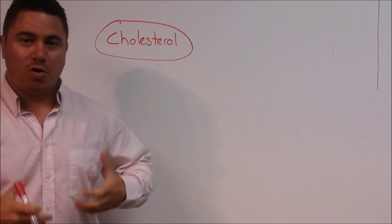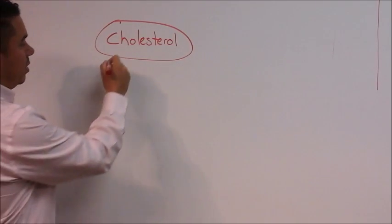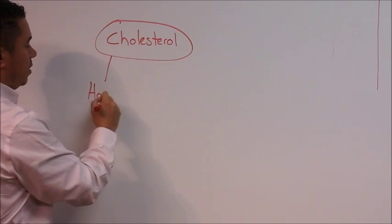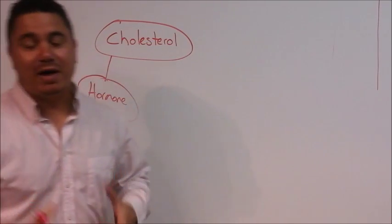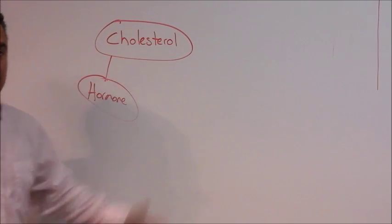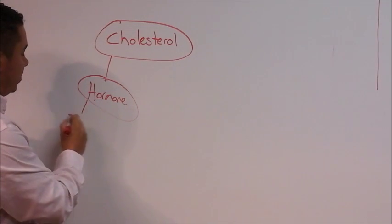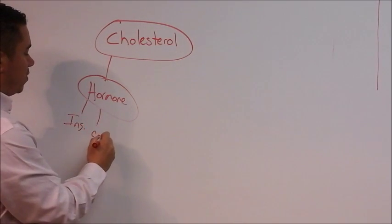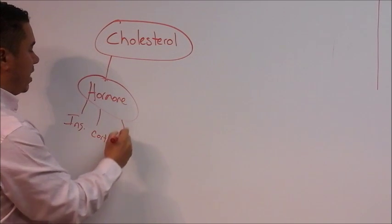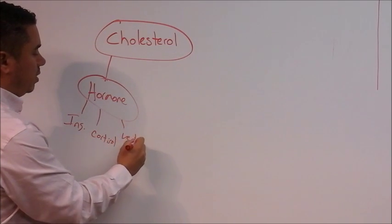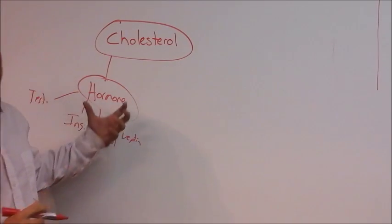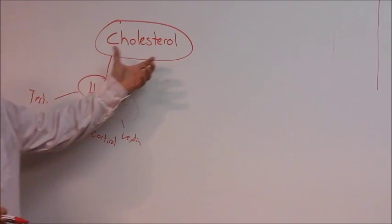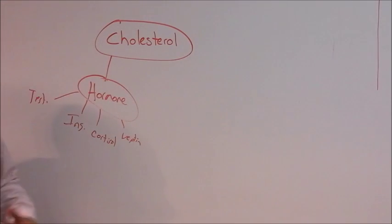So what cholesterol creates in our body is number one. All the hormones in your body are actually created from cholesterol. Some basic hormones: you got insulin, you got cortisol, you got leptin and you can have abelion and testosterone. So this is very important. Without cholesterol you can't make any hormones inside your body.